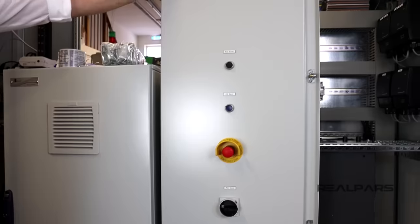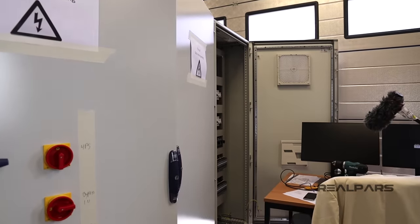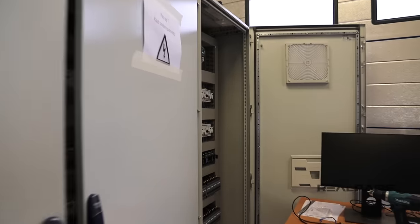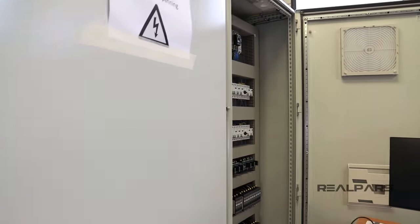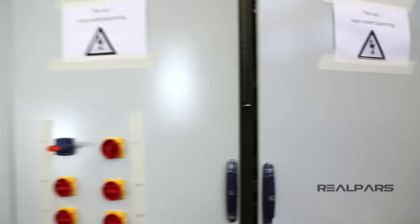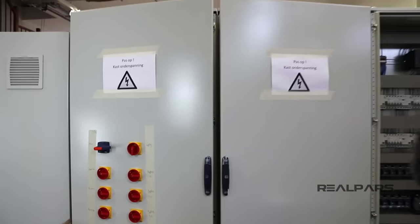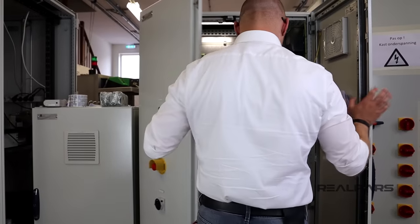So, you have one-door, two-door, or three-door control panel enclosures depending on how big of a panel you have. The more equipment and devices you have, the larger the control cabinet you will need. This one that we have here is a two-door control panel.